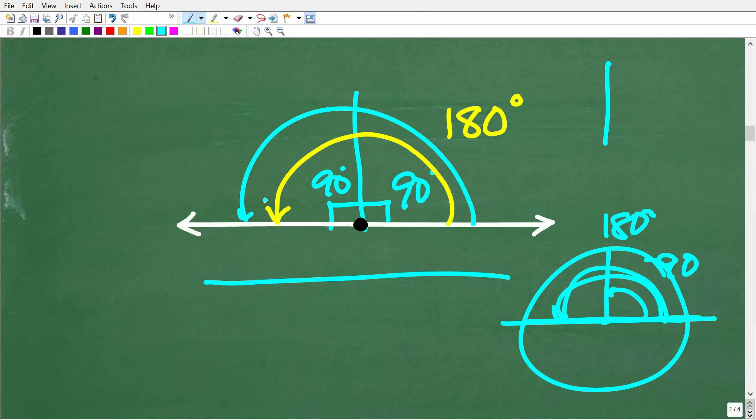So this tends to confuse a lot of people. But just keep in mind, when you see a line, it does have an angle measure, and that is 180 degrees.